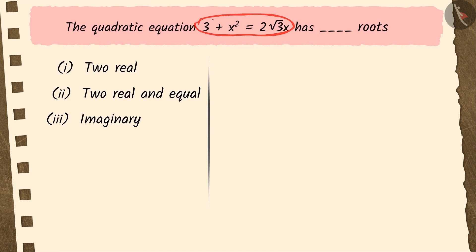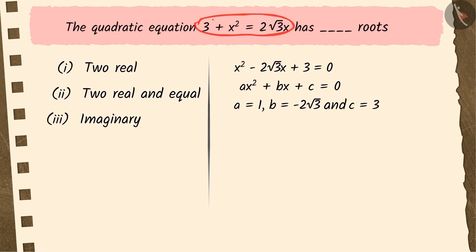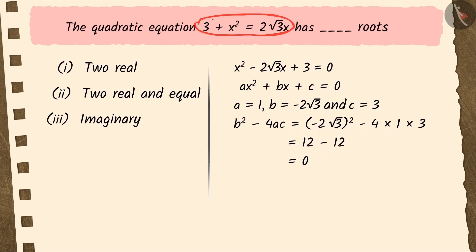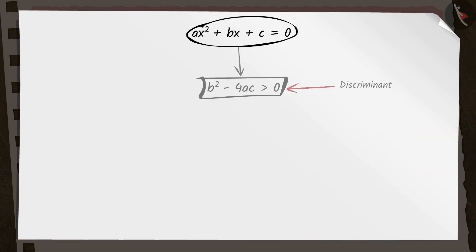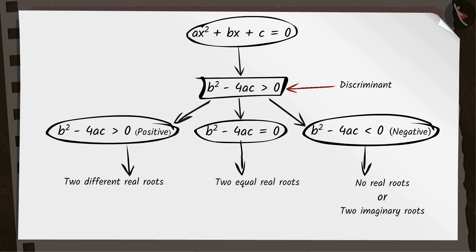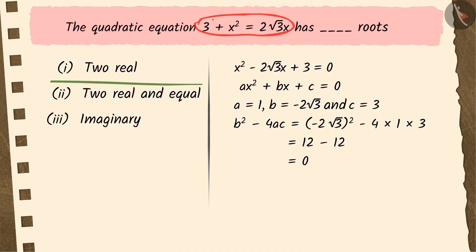The quadratic equation given in the question is not in its standard form. Can you write this equation in its standard form? On comparing it to the standard form of a quadratic equation, we can obtain the values of a, b, and c. In order to know the nature of roots, we have to find the discriminant of the quadratic equation. On substituting the values of a, b, and c in b squared minus 4ac, we get 0. We know that if the value of the discriminant is 0, the equation has two equal real roots. Hence, Rekha's answer, option 2, is the correct answer.